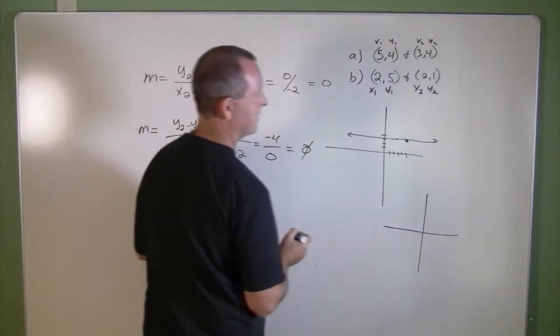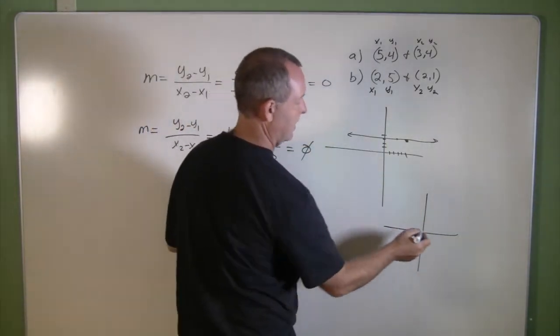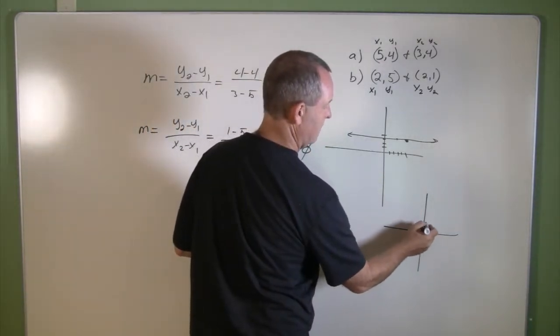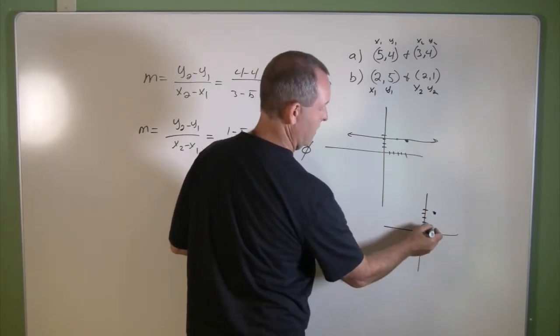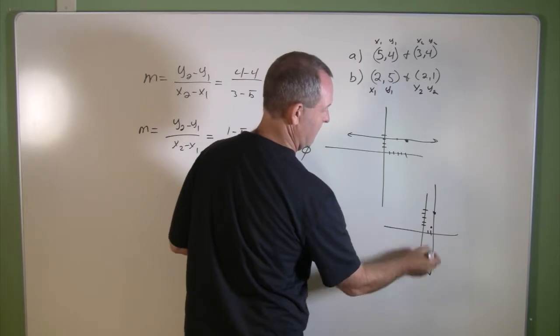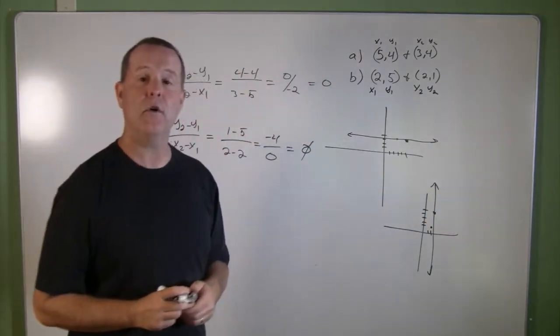Well, if I graph that out and I graph my points, 2 and 5 and 2 and 1, I have a vertical line.